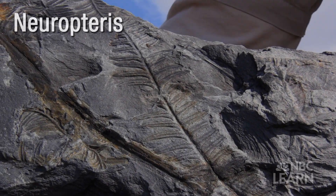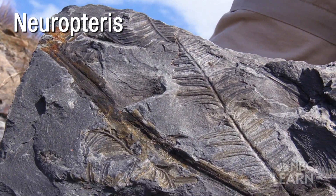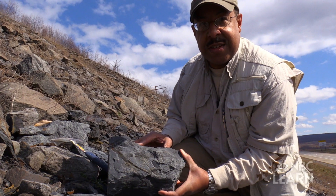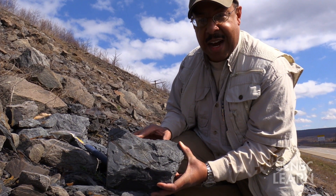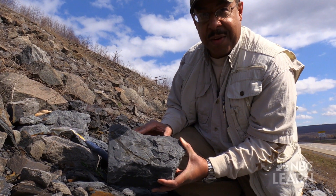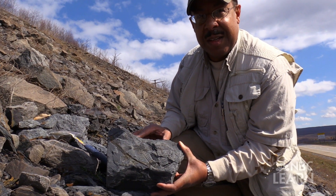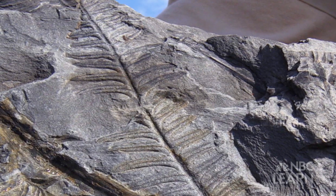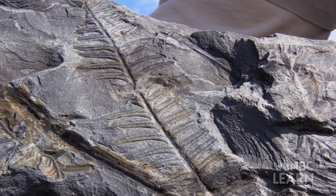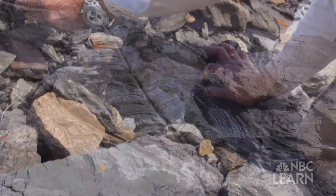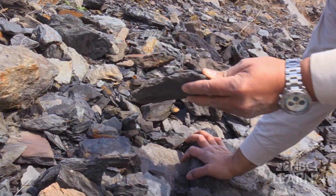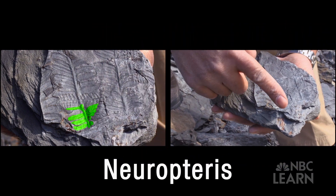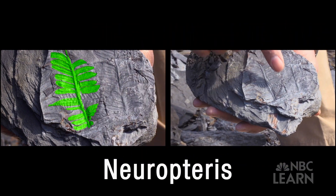A fern called Neuropteris. It was the most common fern from this region at this time, the Pennsylvanian period. This is about 300 million years old — so this is 50 million years older than any dinosaur. And then up here, look at this.